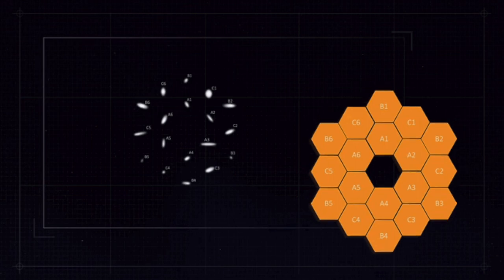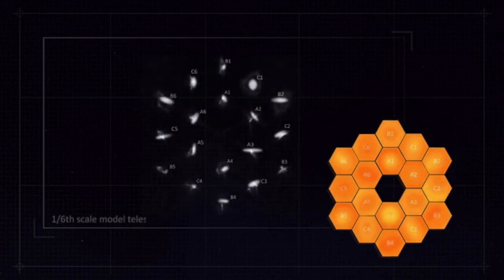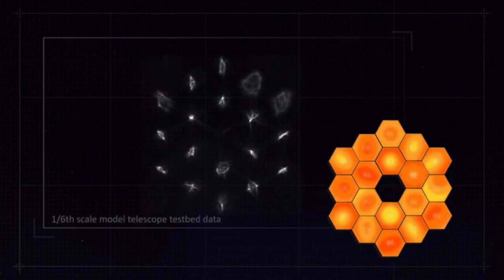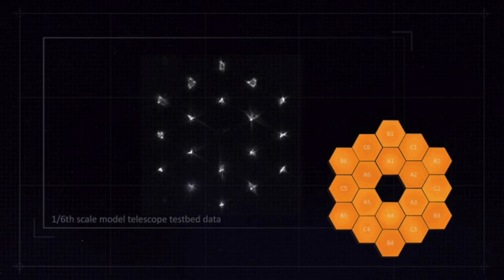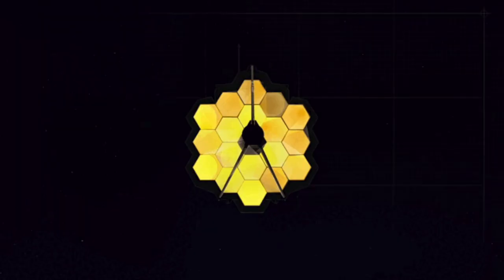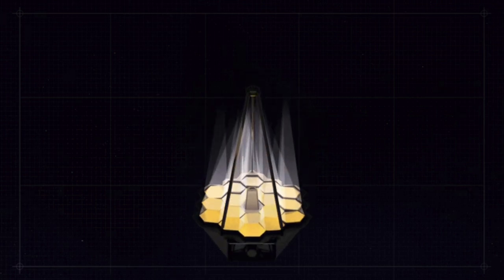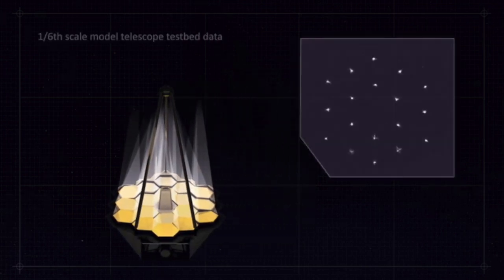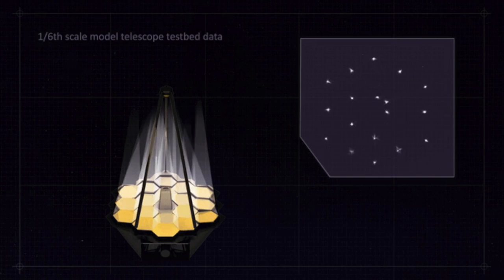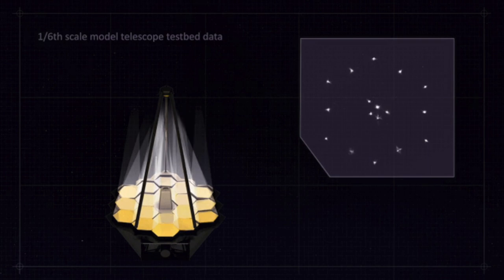The deployment of Webb's various components proceeded as planned, with the solar array, antenna, sunshield, mirrors, and other instruments unfolding and deploying successfully. A few minor issues were reported, including increased friction in one of the mechanisms of the MIRI instrument, but overall, the mission was described as flawless. On January 24, 2022, Webb completed its final course correction, placing it in its planned halo orbit around the Sun-Earth L2 point. The mission controllers at the Space Telescope Science Institute in Baltimore had flexibility to modify the deployment sequence if needed.